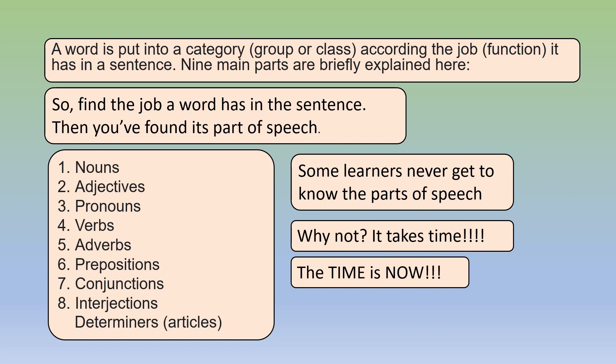We have nine sections here but only eight official parts of speech: one, nouns; two, adjectives; three, pronouns; four, verbs; five, adverbs; six, prepositions; seven, conjunctions; eight, interjections. And then we just add on determiners at the end.